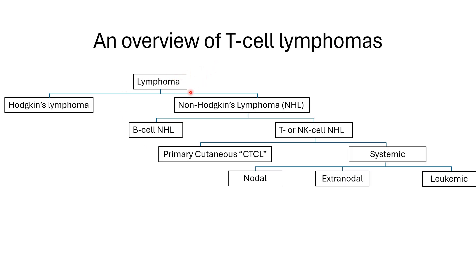This is the overview of the dichotomy of lymphoma. Lymphoma can be divided into Hodgkin lymphoma and non-Hodgkin lymphoma. In the non-Hodgkin lymphoma, we have B non-Hodgkin lymphoma and T or NK cell non-Hodgkin lymphoma. In the T or NK cell non-Hodgkin lymphoma, we can differentiate into either systemic or limited to the skin.